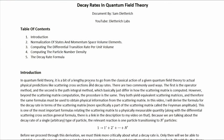In quantum field theory, it is a bit of a lengthy process to go from the classical action of a given quantum field theory to actual physical predictions like scattering cross-sections and decay rates. There are two commonly used ways: the first is the operator method, and the second is the path integral method, which basically just differ in how the scattering matrix is computed. However, beyond the scattering matrix computation, the procedure is the same. They both yield equivalent scattering matrices, and therefore the same formulas must be used to obtain physical information from the scattering matrix.